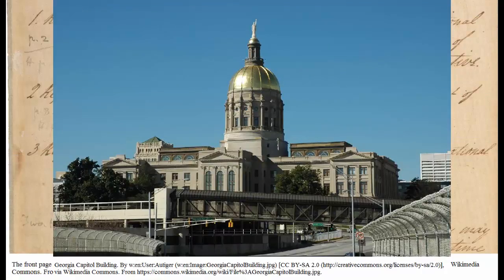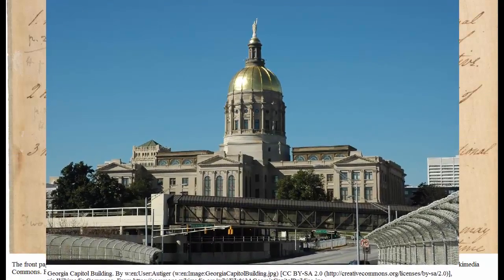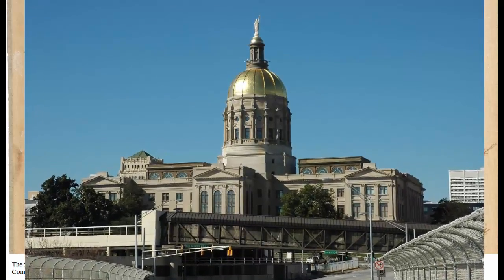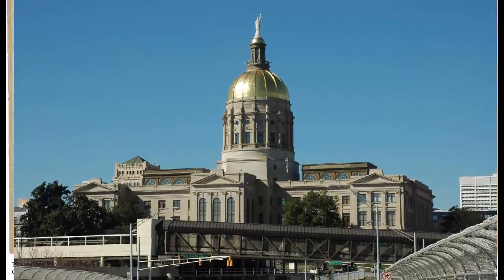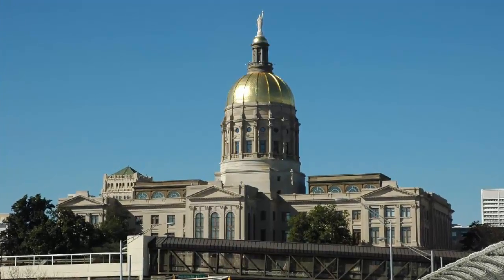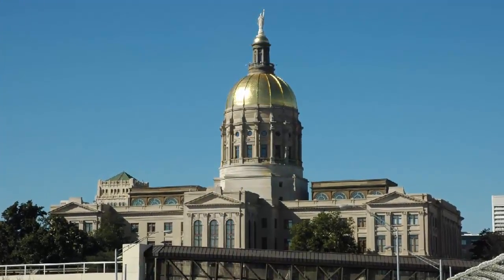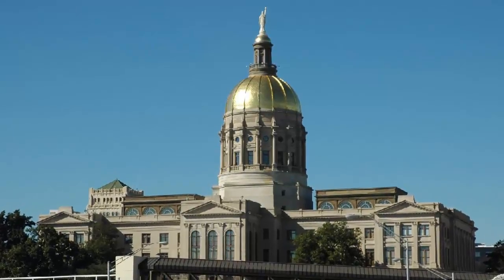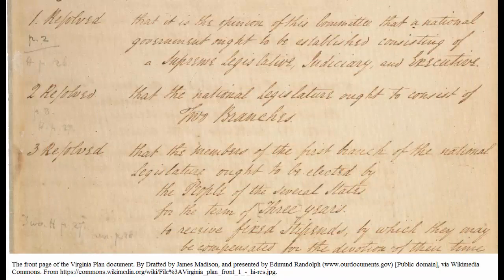State and even local governments would be modeled in this same way. Each state has a House of Representatives and a Senate for the legislative branch, a governor, police force, and National Guard as its executive branch, and a state court system for its judicial branch. Local governments have county and city commissions, police and mayors, and local courts. This portion of the plan went pretty much uncontested, and so forms the basic structure of our government today. The rest of the plan did not go quite so smoothly.